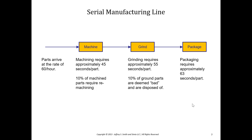Let's review the serial manufacturing line example. Parts arrive at the rate of 60 per hour. We have three phases for the manufacturing process: first there's machining, next there's grinding, and finally packaging.